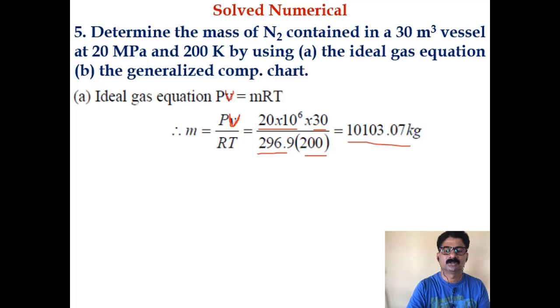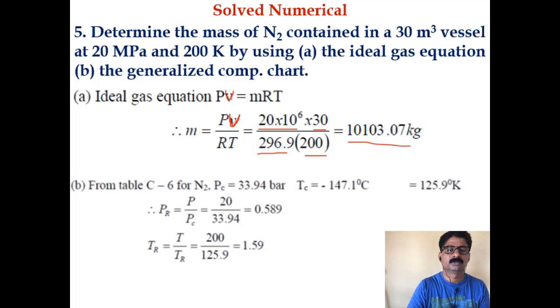Now for the generalized compressibility chart, first let us note down the value of critical pressure and critical temperature from table C6. So critical pressure Pc is 33.94 bar and Tc is minus 147.1 or 125.9 Kelvin. Using this you calculate the reduced pressure and reduced temperature, so we get reduced pressure as 0.589 and reduced temperature as 1.59.